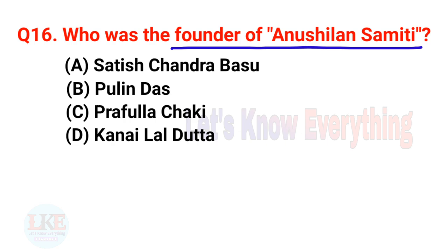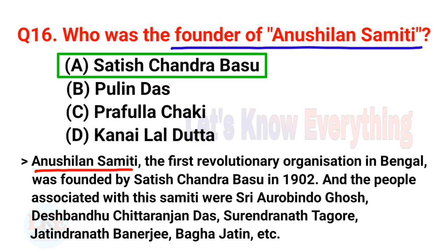Question number 16: Who was the founder of Anushilan Samithi? A. Satish Chandra Basu, B. Pulinadas, C. Prafulla Chaki, D. Kanaiyalal Datta. The right answer is option A, Satish Chandra Basu. Anushilan Samithi, the first revolutionary organization in Bengal, was founded by Satish Chandra Basu in 1902. People associated with this Samithi included Sri Aurobindo Ghosh, Deshbandhu Chittaranjan Das, Surendranath Tagore, Jatindranath Banerjee, and Bagha Jatin.